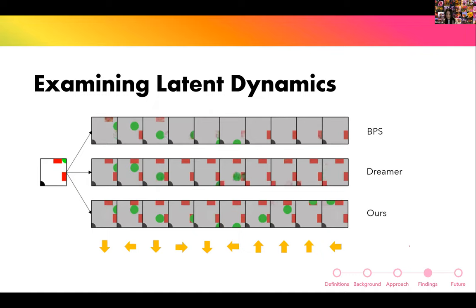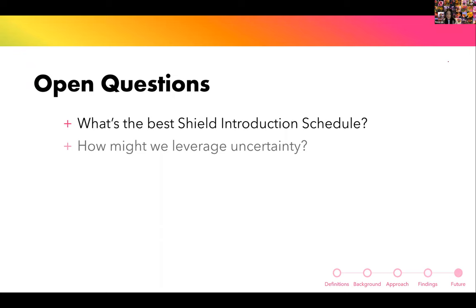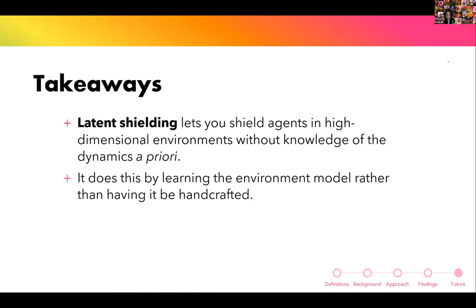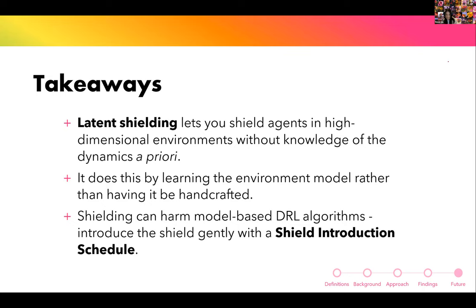Examining the latent dynamics, our model specifically captures the parts of the environment that are dangerous. Open questions include: what is the best shield introduction schedule, how might we leverage uncertainty, and how might we leverage offline pre-training? The key takeaways are: we introduced latent shielding — you don't need a handcrafted abstraction of the environment first; we learn that abstraction instead; and shielding can harm model-based RL algorithms, so introduce the shield gently with the shield introduction schedule.